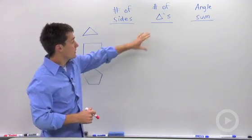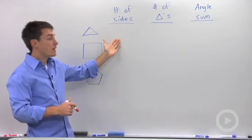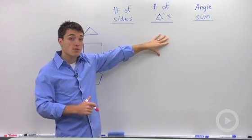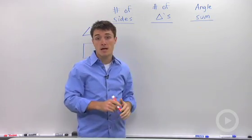I've set up a table here where we're going to look at how many sides does it have, how many triangles can we fit inside that polygon, and what's going to be the angle sum.